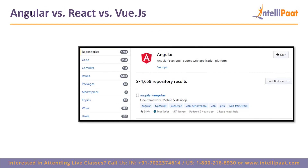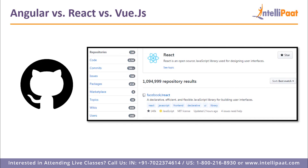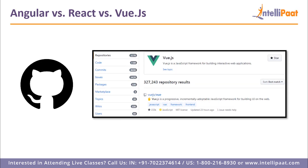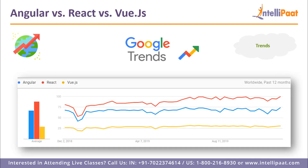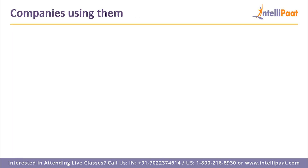Looking at GitHub popularity: searching Angular returns around 500,000–600,000 repository results; React.js has nearly double that at over 1 million; and Vue.js has about 327,000 results. In terms of trends, React.js has been consistently the most popular, Angular is quite close to React.js, and Vue.js is less popular due to its smaller community.